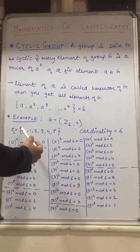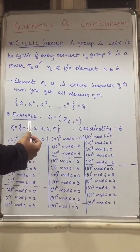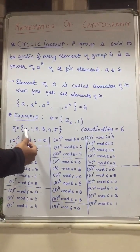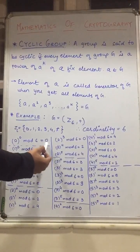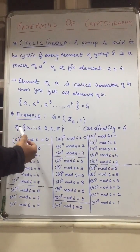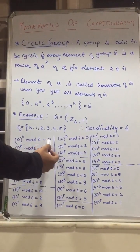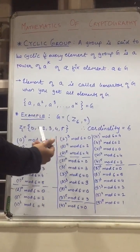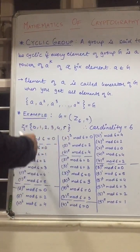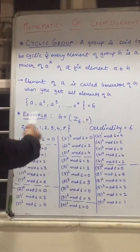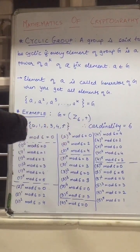Now let's take one by one number and get the generator and subgroups. First is 0. So 0 raised to 0 mod 6 is equal to 0, and 0 raised to 1 mod 6 is equal to 0. We have to increase the power, and as it is a binary operator we have to add. So no matter how many times we add 0, mod 6 will be equal to 0.